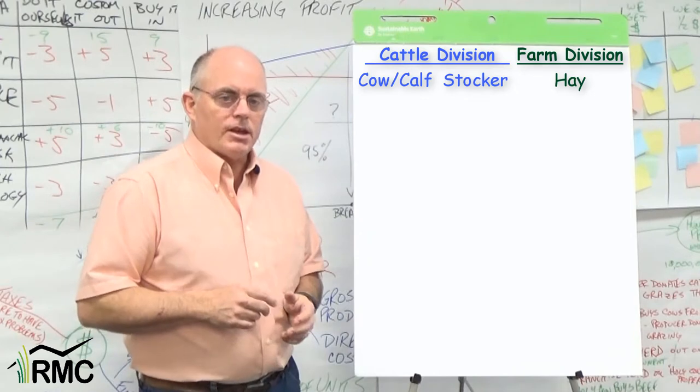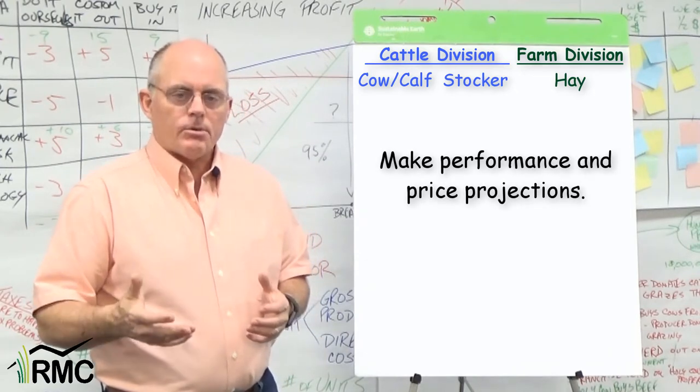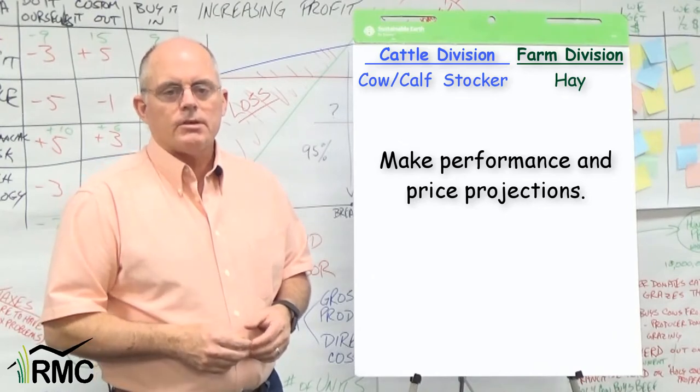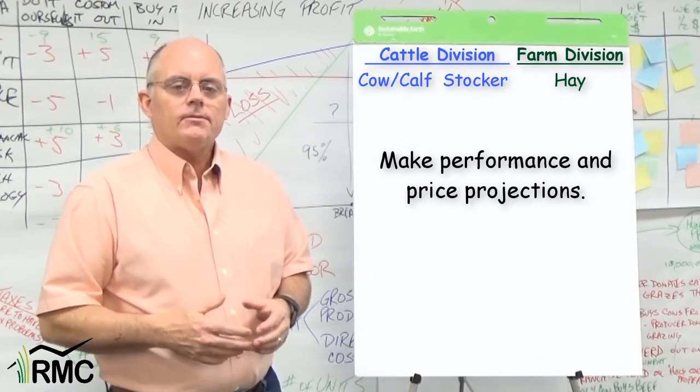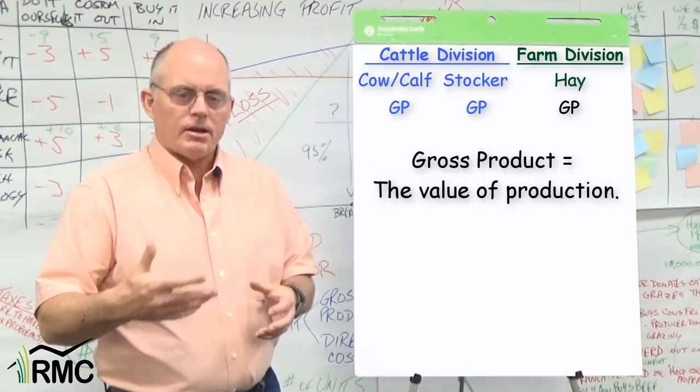So here's how we put the numbers together. We start by estimating the production that we'll get from each enterprise and make some reasonable guesses about the prices we think we'll receive. That gives us the information we need to project gross product. That's the value that each enterprise produces.